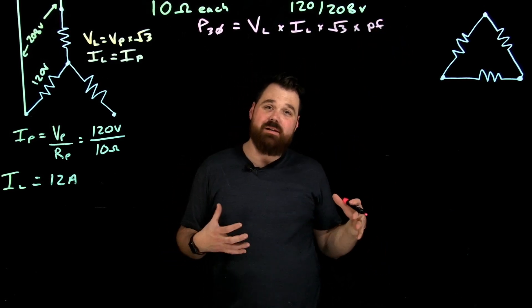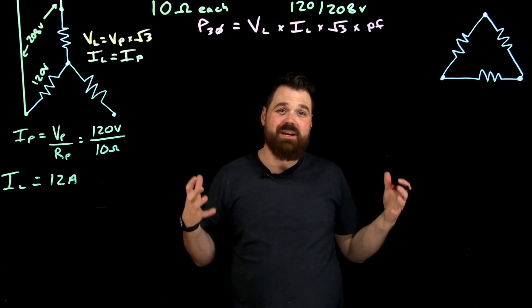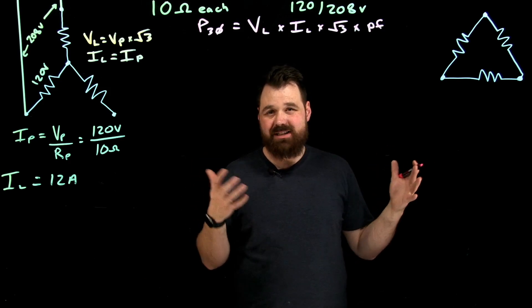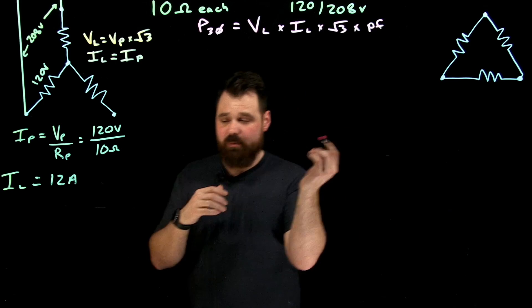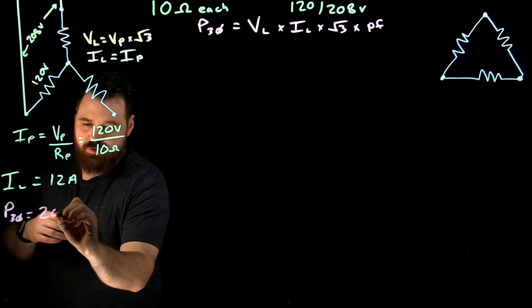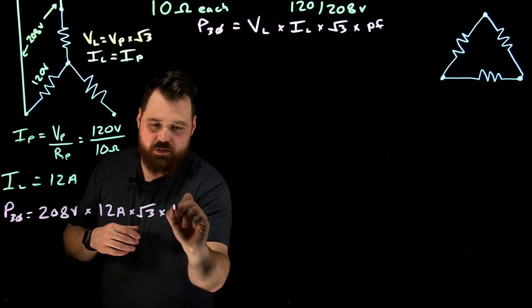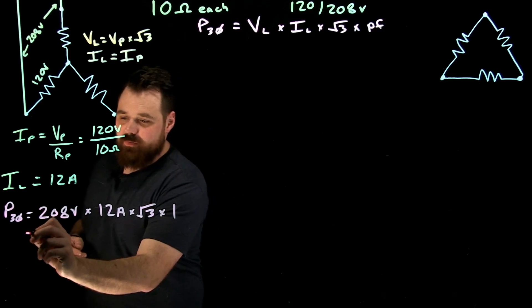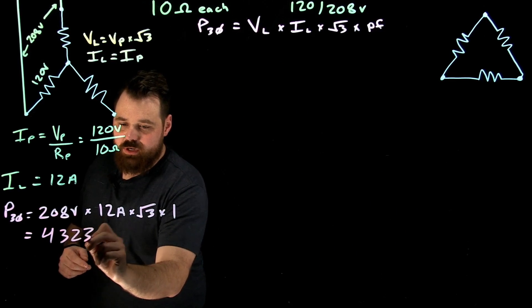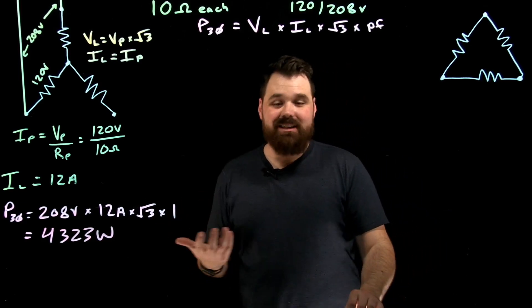Now of course when we're talking about resistors, our power factor equals one. Resistors have a unity power factor or a power factor of one. So my Watts and my volt amps will be the same. My Watts and my VA are the same, but I'm going to take that formula. I'm going to go power three phase equals 208 volts times 12 amps times root three times one, my power factor. And if I were to connect my resistors this way, I would get 4,323 Watts. I'd also get 4,323 VA because my Watts equal my VA.